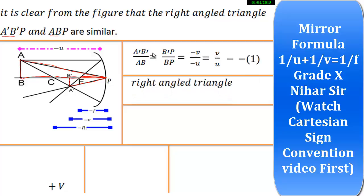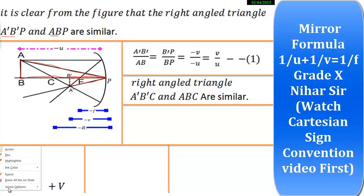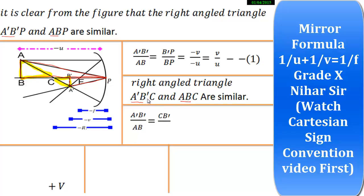Now we consider two more similar triangles: triangle A'B'C and triangle ABC. A'B'C is similar to ABC. I will make the similarity ratio for these two triangles as well: A'B' upon AB equals B'C upon BC. This is equation number two.